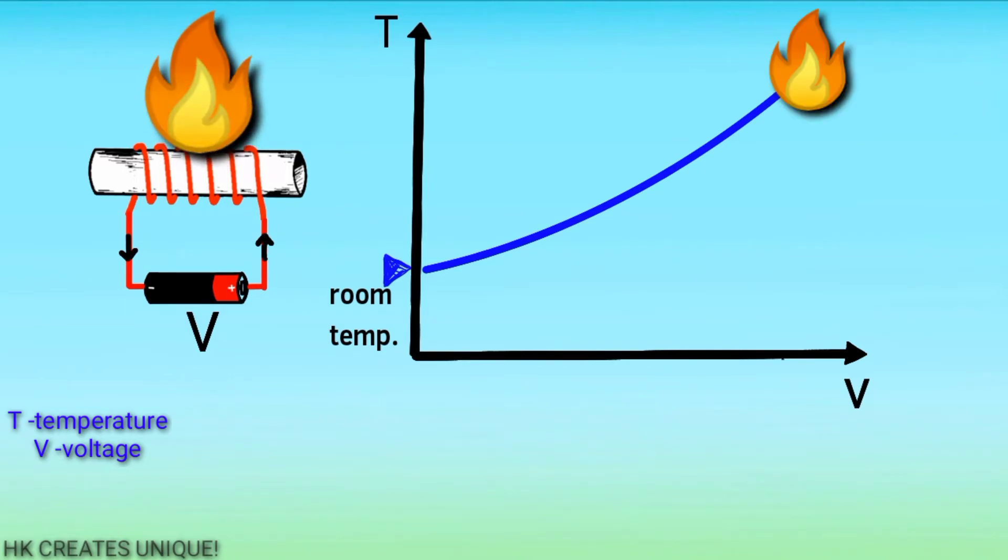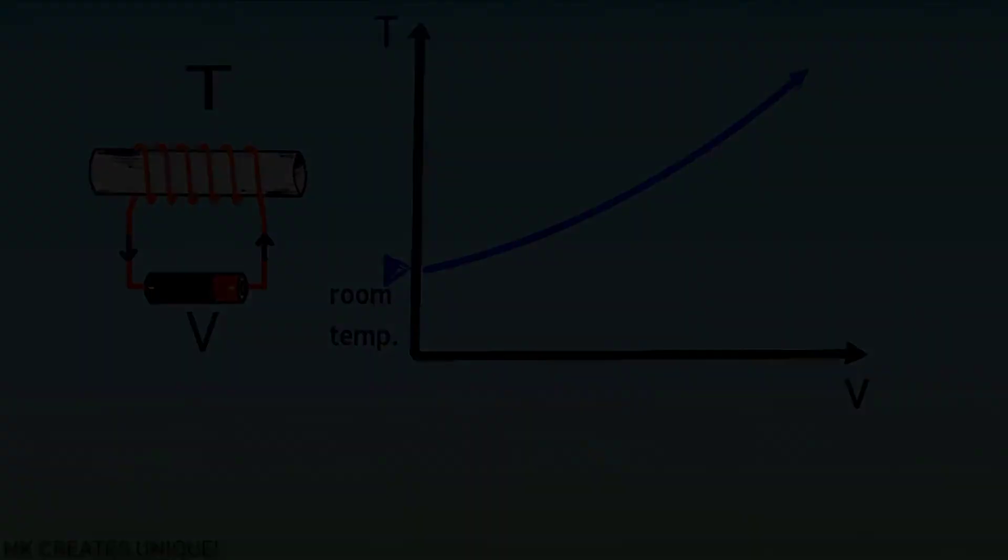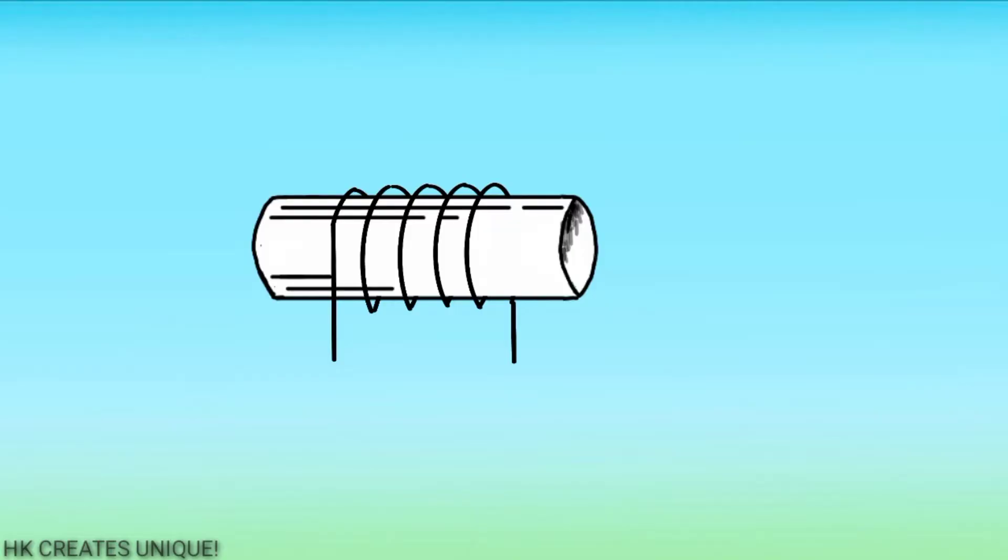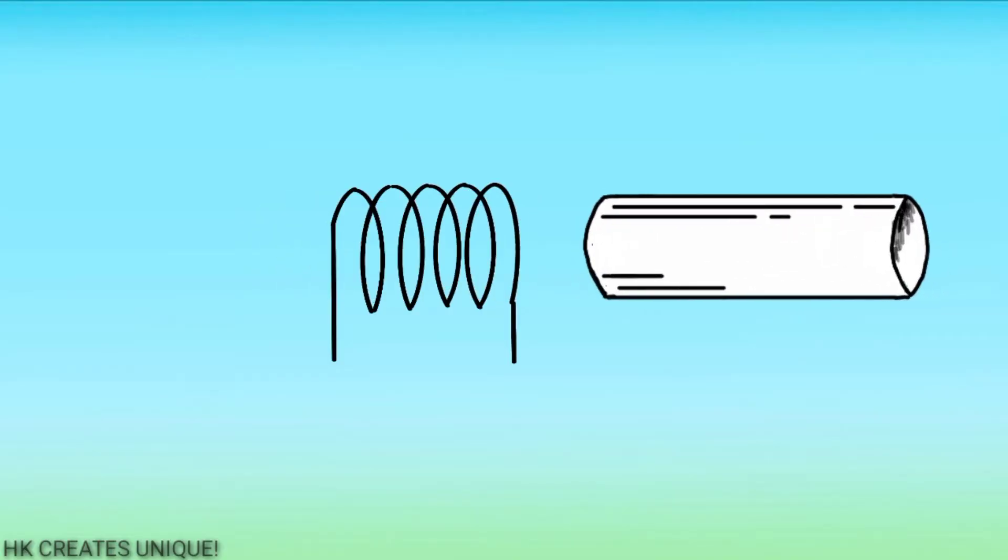So make sure you do not apply that much voltage which will burn the coil. The material used for winding magnet wires is known as core. You can use PVC pipe, paper, etc. as a core.